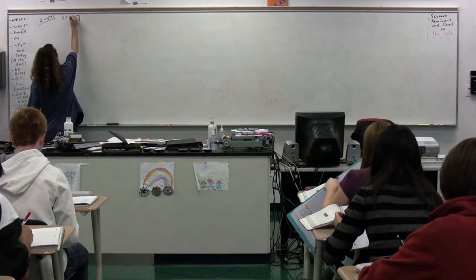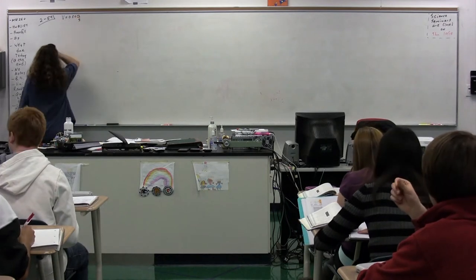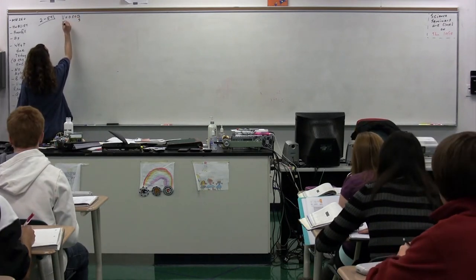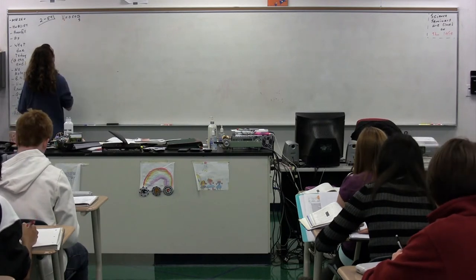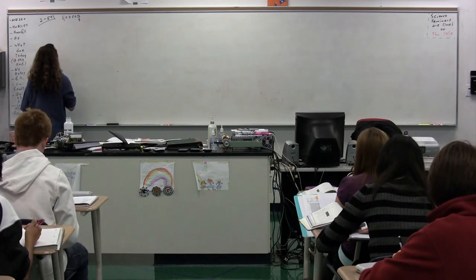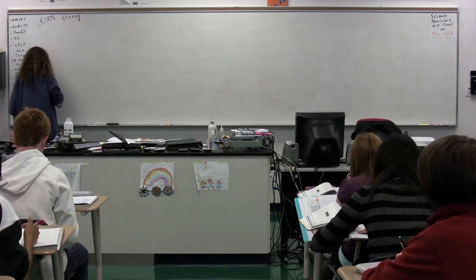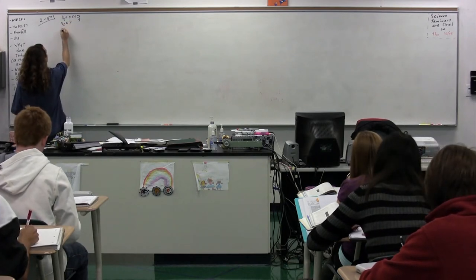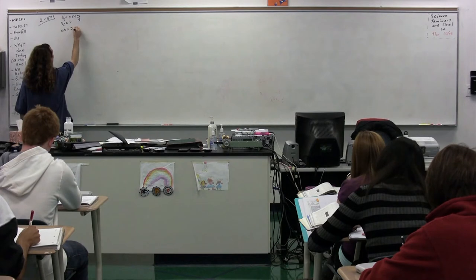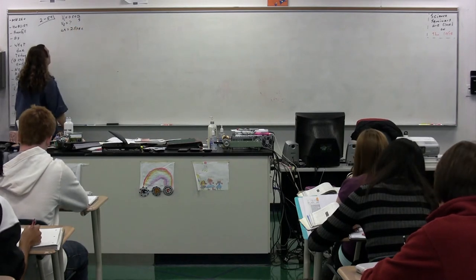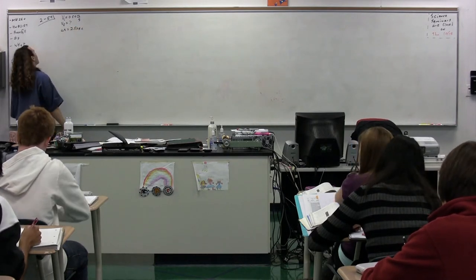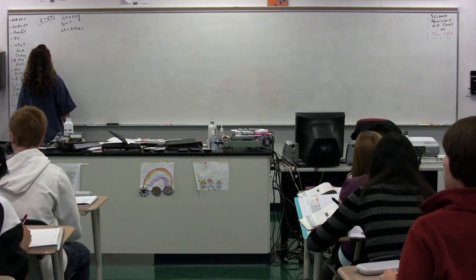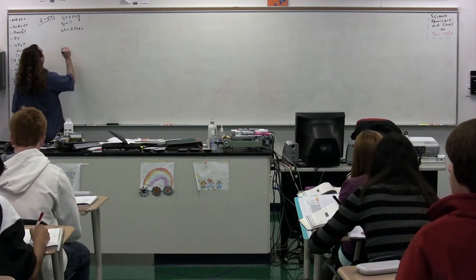What is the velocity in the fish? Stop. That velocity should be velocity initial, and then we don't know velocity final, and delta t is 2.5 seconds. How far below the pelican is the fish after 2.5 seconds? And then we don't know delta x.